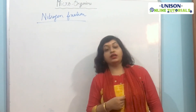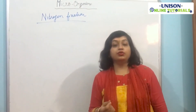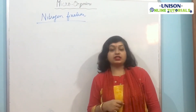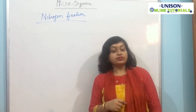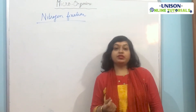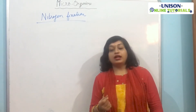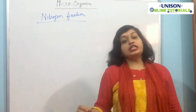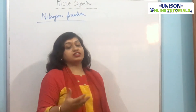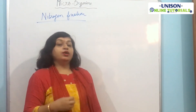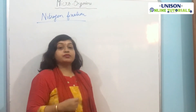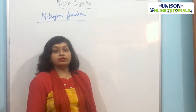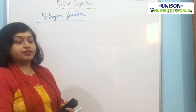Nitrogen fixation is carried out by microbes present in the soil, in the roots, and in the root nodules of some leguminous plants. Blue-green algae also fix nitrogen. Additionally, during thunderstorms, lightning causes the temperature to rise, and the nitrogen present in the atmosphere combines with oxygen to form different compounds of nitrogen. This is nitrogen fixation.